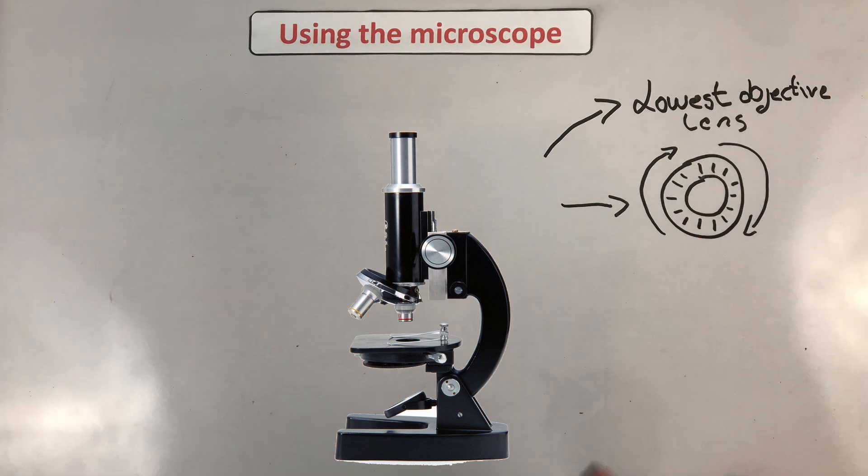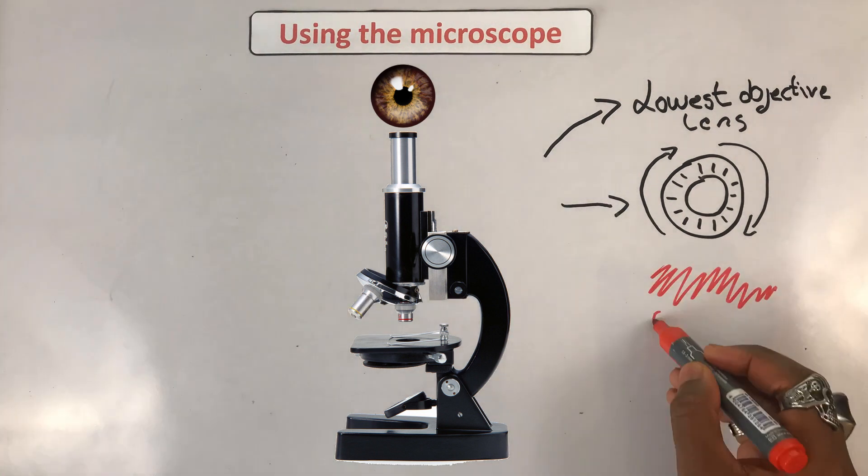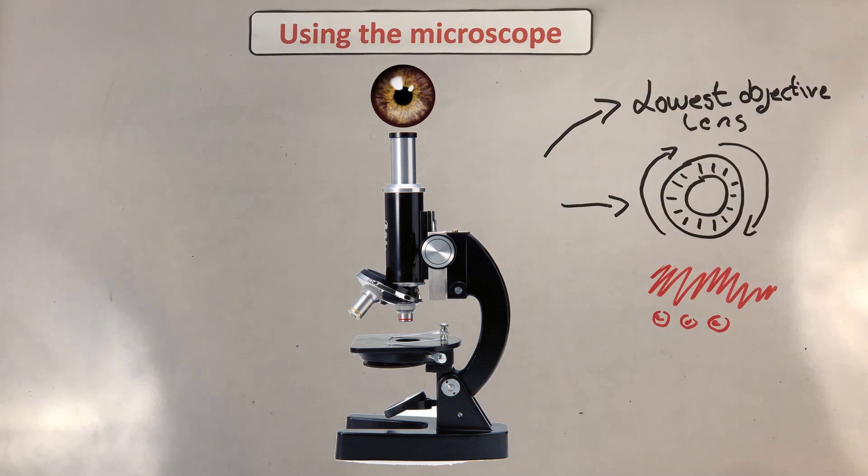Number three, now look through the eyepiece and turn the course focusing wheel in the opposite direction, increasing the distance between the stage and the lens. Number four, when the cells come into focus, rotate to a higher magnification.